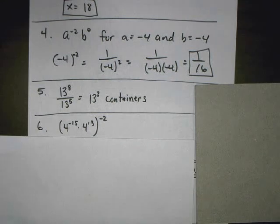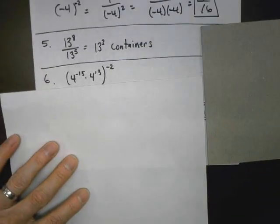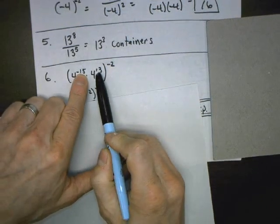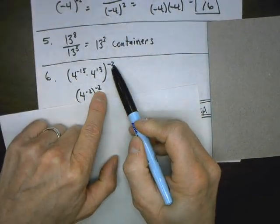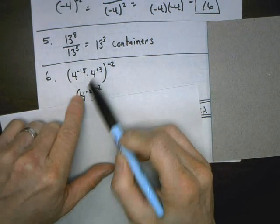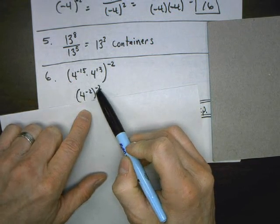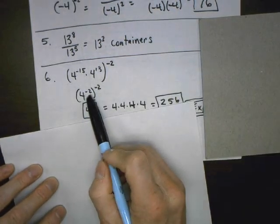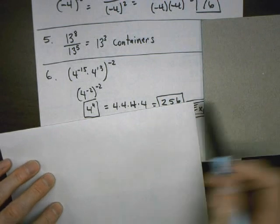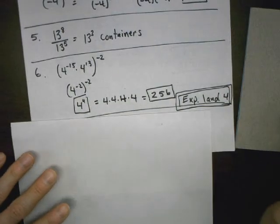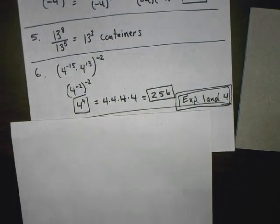Number 6: decide which expression is equivalent to the given expression. Since they're the same base inside, copy the base and add the exponents: negative 15 plus 3 is negative 12. Then there's a negative 2 on the outside — that's a power of a power, so copy the base and multiply the exponents. Negative times negative is positive, giving 4 to the 4th, which is 16 times 16 equals 256. The answers that work are expressions 1 and 4.